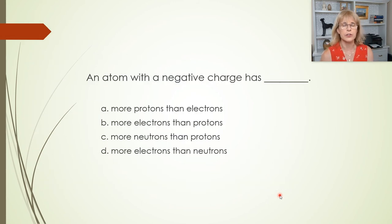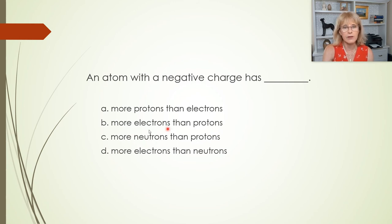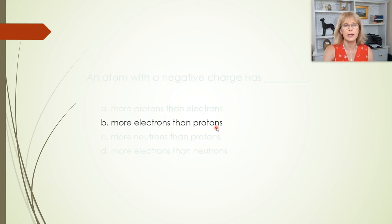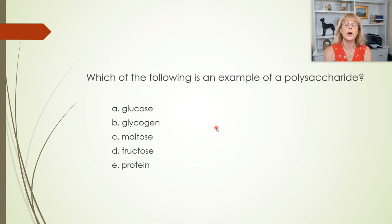An atom with a negative charge — what is true about that? Electrons are negatively charged, protons are positively charged, neutrons are neutral. So if I had more negatively charged things than positively charged things, overall I'd have a negative charge. Which of these is an example of a polysaccharide? Glucose — monosaccharide. Maltose — that's actually a disaccharide. Fructose — monosaccharide.